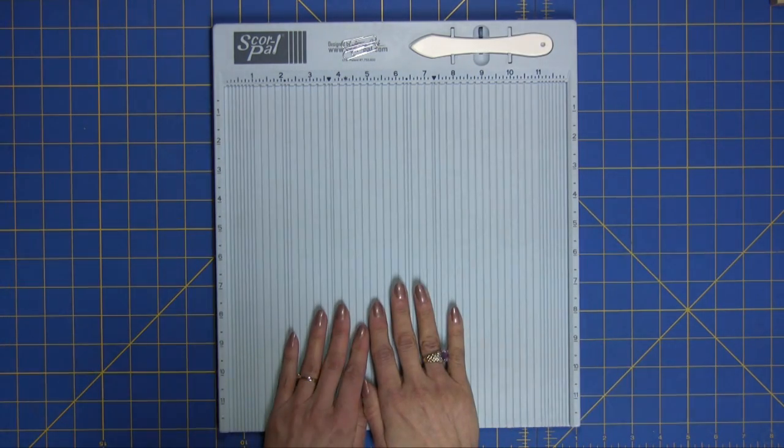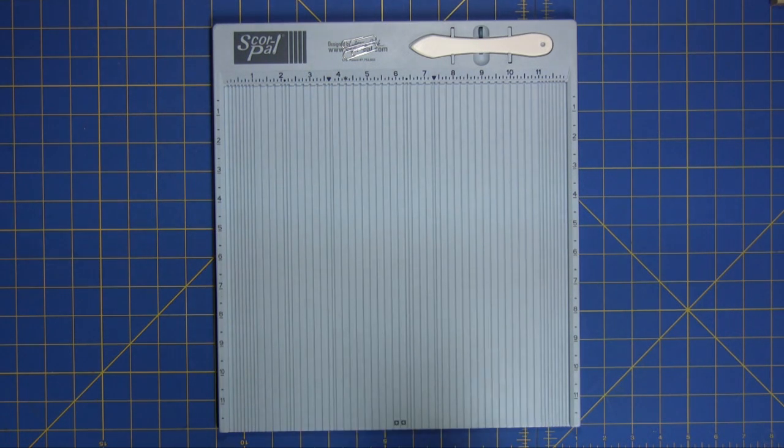A con of the ScorePal is that the price is $29.99 and it's a little higher than the Martha Stewart scoreboard. And I believe her retail price is $19.99 on the Martha Stewart scoreboard.